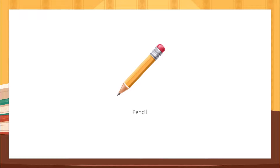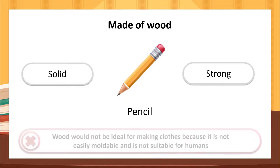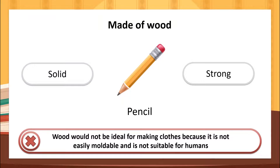This pencil is made of wood. Wood is a solid and strong material, which is what helps us write with pencils. Wood would not be ideal for making clothing, because it cannot be easily molded and is not suitable for humans.